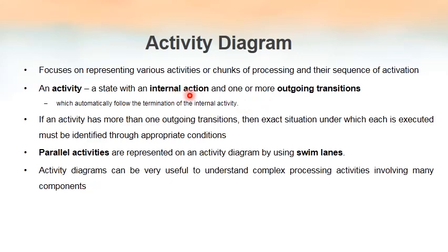It is possible to represent parallel activities — those activities that take place at the same time, like multi-processing. For example, when we use our laptops or computers we perform different activities at the same time; those are known as parallel activities. To represent parallel activities we use swim lanes. Most of you might have understood what swim lanes mean from swimming races, where each participant has their own track or lane.